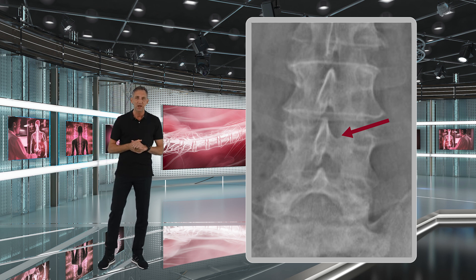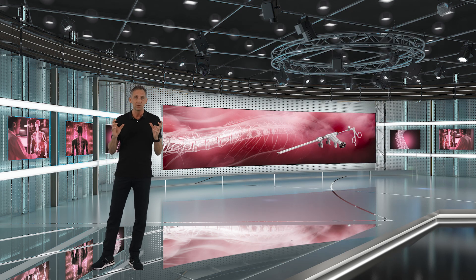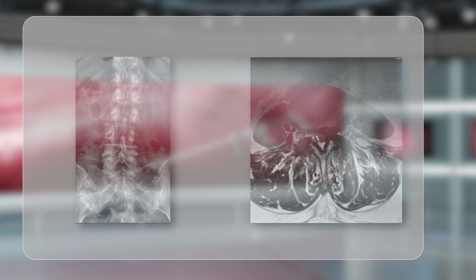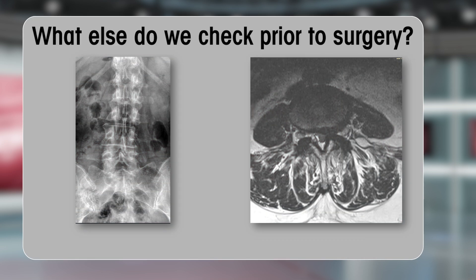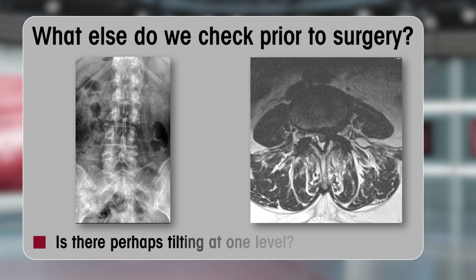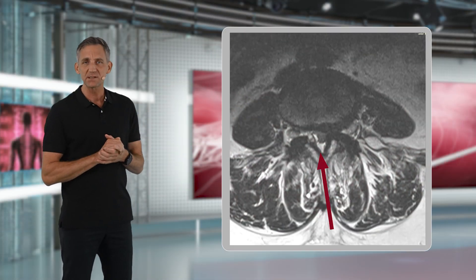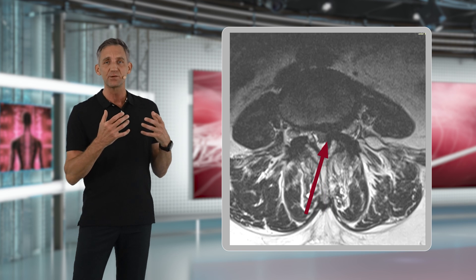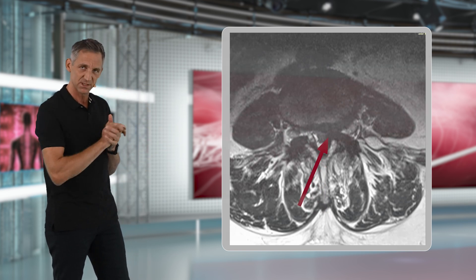That is something to check before surgery, especially if you are not yet used to working with the endoscopic high-speed burr. We also check whether there is a tilt or additional rotation at the targeted level. In those cases we would prefer to come from the convex side — for example in an over-the-top decompression — because the rotation will make it easier to go over the top to the contralateral side.